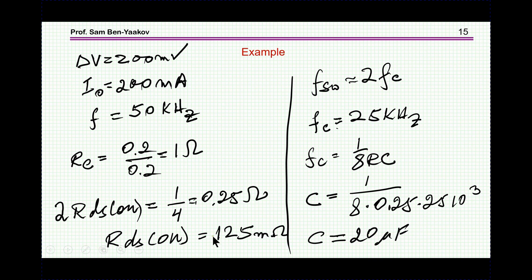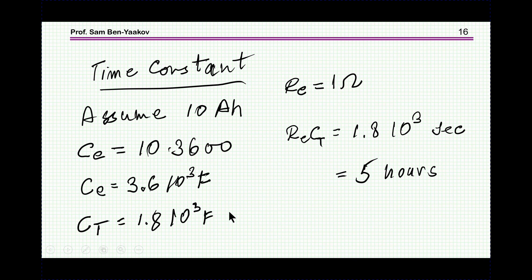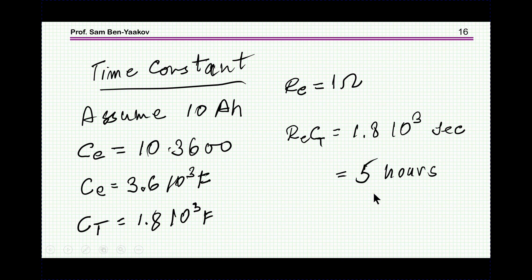Let's see how long it would take to balance. Taking a numerical example of two batteries each with 10 amp-hour capacity, the equivalent capacitance of each battery is 10 times 3,600, giving 36,000 farads. Since they are in series, the total is half that. With R sub E equal to 1 ohm, the time constant of this process is about 5 hours, which is not too bad because once the process converges, the differences will no longer be large during normal operation.